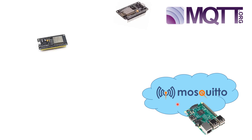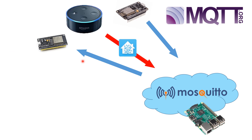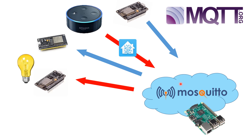With the Mosquitto broker, one microcontroller can publish messages to a certain topic and another can subscribe to that topic — each color represents a topic. For example, you can have an Amazon Echo use Home Assistant to send an MQTT message to a topic, and an ESP8266 can subscribe to that topic and turn on a light — easily controlling lights using Amazon Alexa, Home Assistant, and Mosquitto.